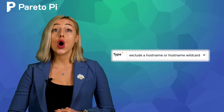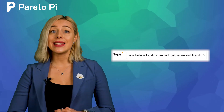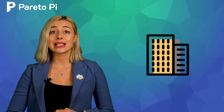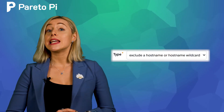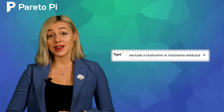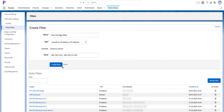The second option is to exclude a hostname or hostname wildcard. This is a great option for large companies and office buildings where you have many floors and meeting rooms, and potentially each can have a different IP address within a specific range. When you're ready, click the Create Filter button.